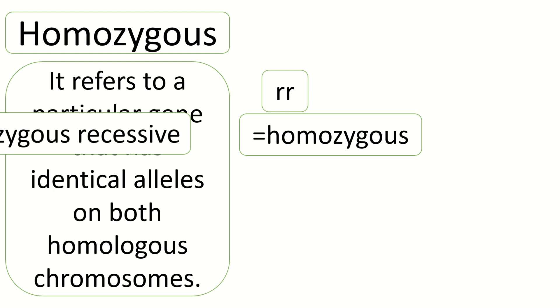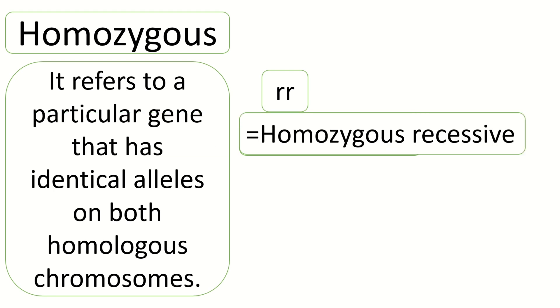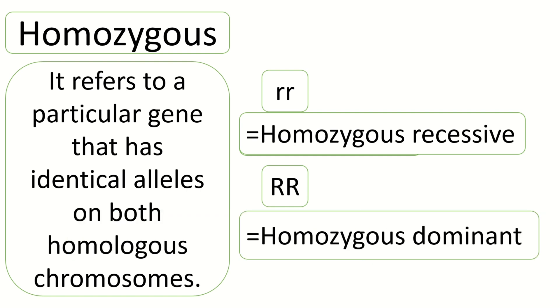In this case they are homozygous recessive because the same alleles are both small letters. Big R and big R is homozygous dominant because the same alleles are both capital letters.